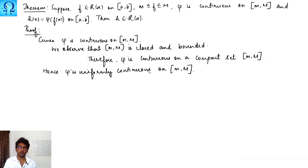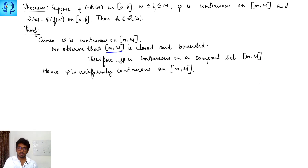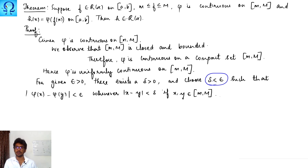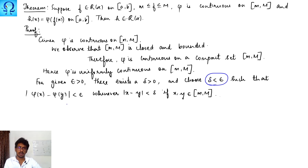Let us get into the proof. Given φ is continuous on the interval [m, M], which is a closed and bounded, hence compact set, φ must be uniformly continuous. By the definition of uniform continuity, for every ε > 0 there exists δ > 0. To prove this theorem, we impose the extra condition that δ must be less than ε, such that the ε-condition holds whenever the δ-condition holds.